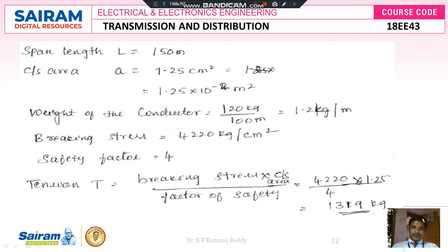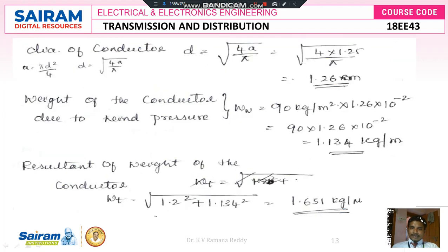Given: span length L = 150 meters, cross-sectional area A = 1.25 cm² = 1.25 × 10⁻⁴ m², weight of conductor = 120 kg per 100 meters = 1.2 kg per meter, breaking stress = 4220 kg per cm², safety factor = 4. Tension T = (breaking stress × cross-sectional area) / safety factor = (4220 × 1.25) / 4 = 1319 kg.